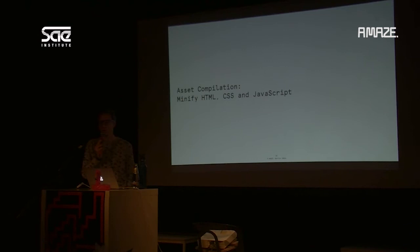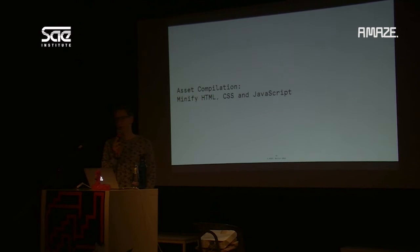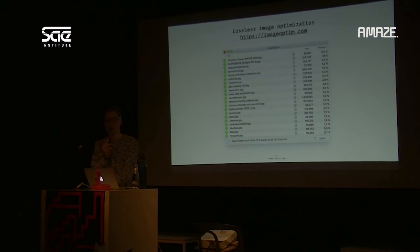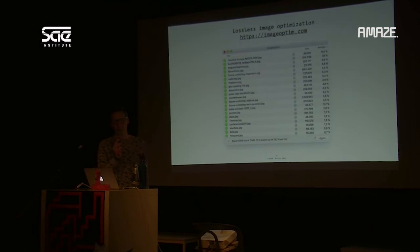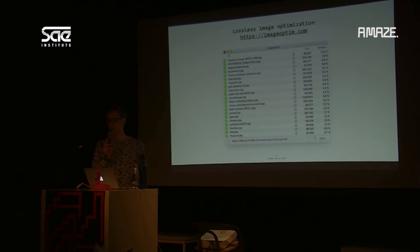Most static site generators support asset compilation out of the box. With asset compilation, you can automatically remove whitespace from your code and combine multiple CSS and JavaScript files into one single file, meaning fewer requests to your server and smaller files — making your site load faster. Another technique is lossless image optimization, where a free tool compresses all your images in a way you see no difference between the original and compressed image. A free Mac tool called ImageOptim does this — it's easy and there's no downside.